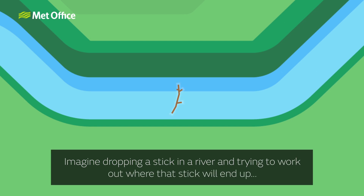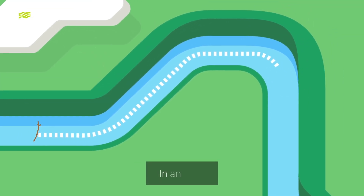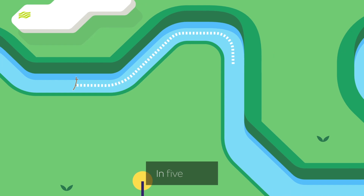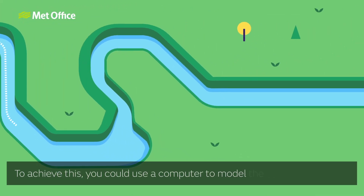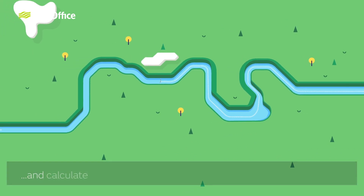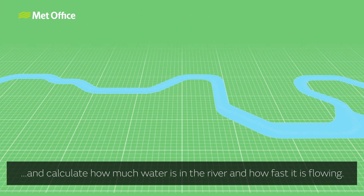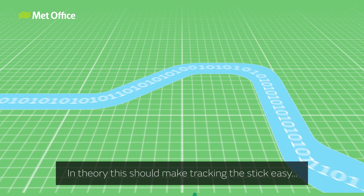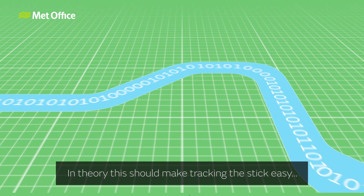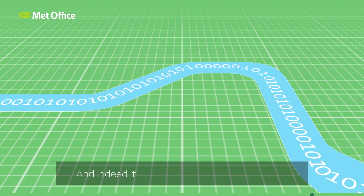Imagine dropping a stick in a river and trying to work out where that stick will end up — in a minute, in an hour, in five days. To achieve this you could use a computer to model the shape of the river and calculate how much water is in the river and how fast it is flowing. In theory this should make tracking the stick easy, particularly with a powerful computer. And indeed it could, under perfect conditions.